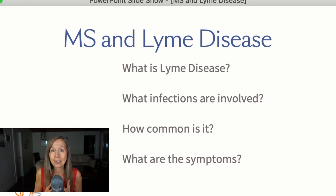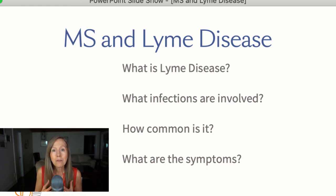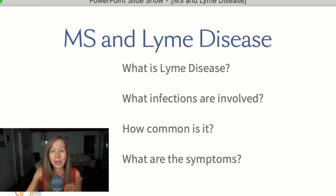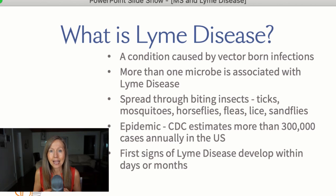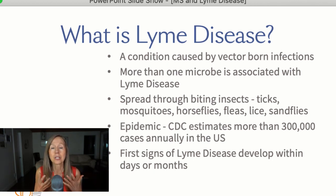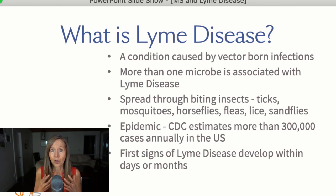With respect to Lyme disease — our topic for today — what is Lyme disease and what infections are involved? Some of you may not know that there are multiple microbes involved; it's not just one type of bacteria. How common is it and what are the symptoms? Lyme disease is caused by vector-borne infections, meaning biting insects. Today we'll talk about three really common microbes involved with causing Lyme disease, though there are more than three.